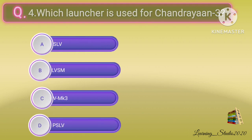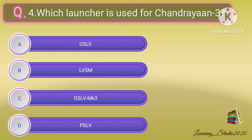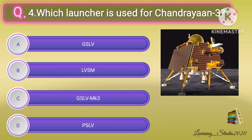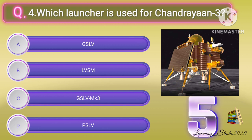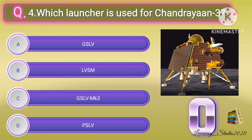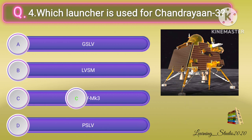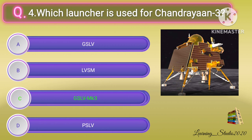Which launcher is used for Chandrayaan 3? Correct answer: option C, GSLV MK3.